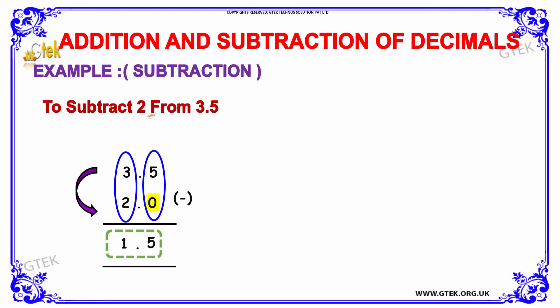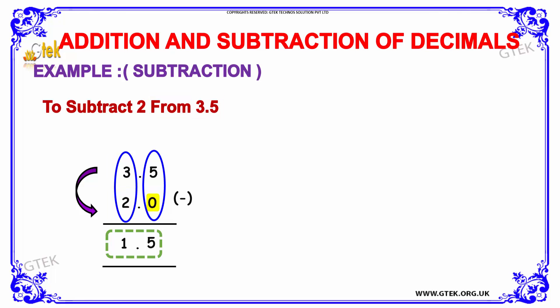If the term 'from' is indicated in the question, it means that the term after 'from' — that is 3.5 — will be considered as the first term, followed by the term before 'from'. So we have 2. Since 2 is a whole number, in order to treat it as a decimal number, we have added 0. Now both terms are equal in decimal places.